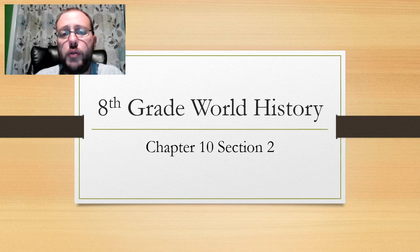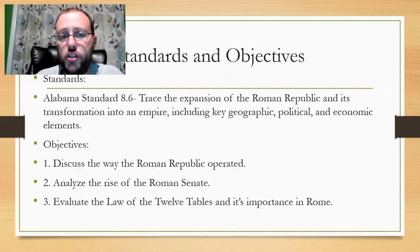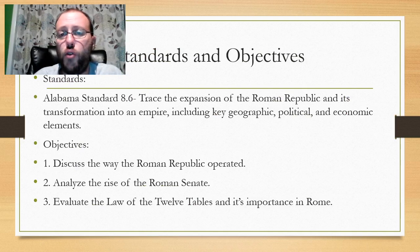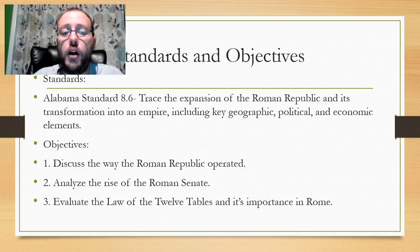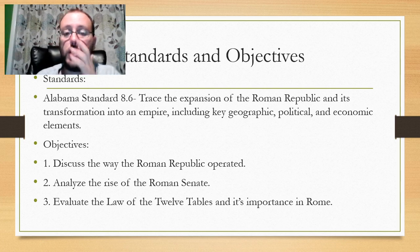Now we're in Chapter 10, Section 2. The standard is still the same: trace the expansion of the Roman Republic and the transformation into an empire, including key geographic, political, and economic elements. This time we're going to discuss the way the Roman Republic operated, analyze the rise of the Roman Senate, and evaluate the Law of the Twelve Tables and its importance in Rome.